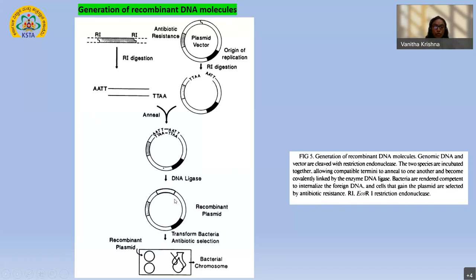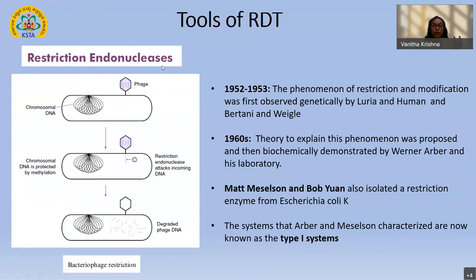It is called recombinant because I was successful in introducing the foreign gene into the vector. Then I need to select for the positive clones and amplify it through a process called transformation — transforming the recombinant DNA into bacteria. Not all bacteria easily take up DNA added to the medium; you need to make them competent to take up the external DNA. Then you plate it out to select for your clones. This is the general overall flow of how one can generate recombinant DNA molecules.